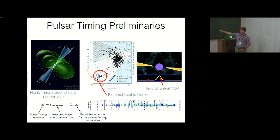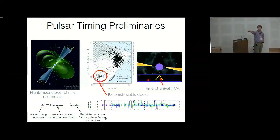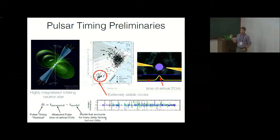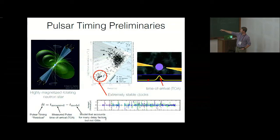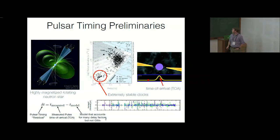This is called a P-P diagram. This is the log of the period derivative versus the spin period — how fast the pulsar is slowing down. There's a huge population of pulsars with periods on the order of a second — young, unstable pulsars not good for timing. Down here we have the millisecond pulsars, with about five orders of magnitude difference in the spin period derivative. These are incredibly stable, with short periods, and these are the ones we use for gravitational wave detection.